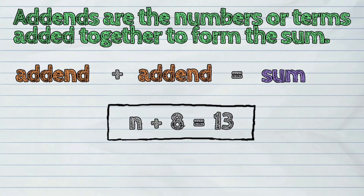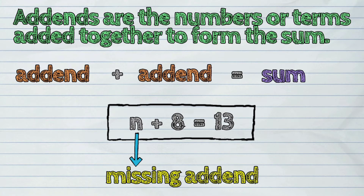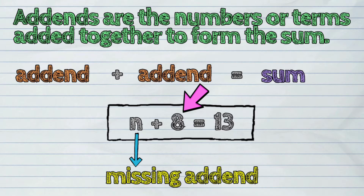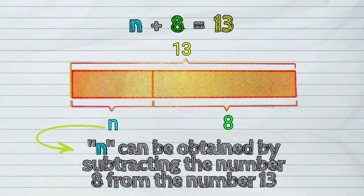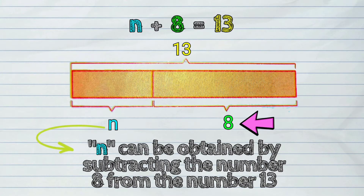In this equation, we're going to find the value of n such that, when added to 8, the result is 13. Let us have a visual representation of the given equation. By looking at this representation, we're able to understand that n can actually be obtained by subtracting the number 8 from the number 13.